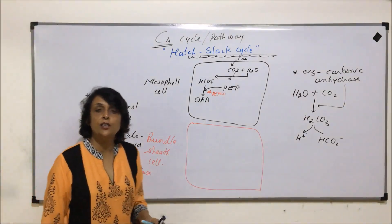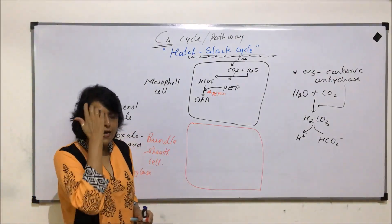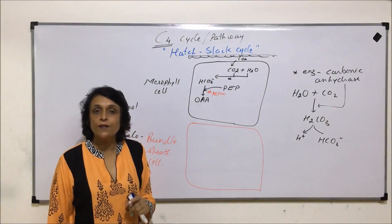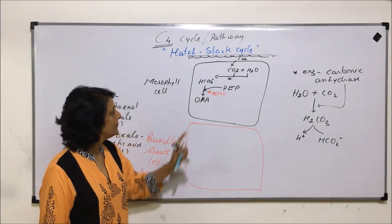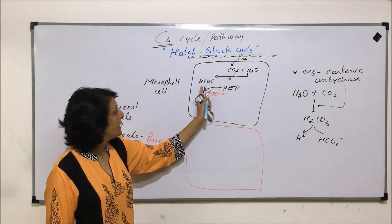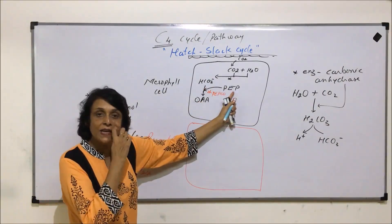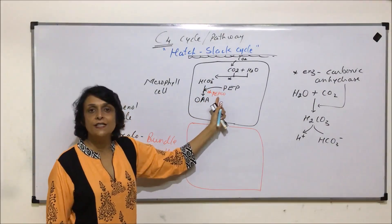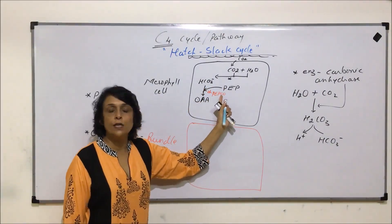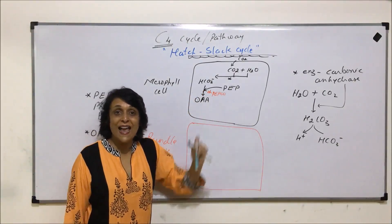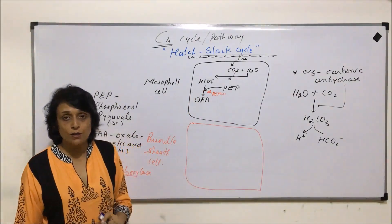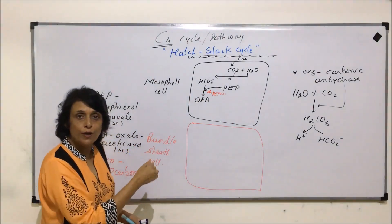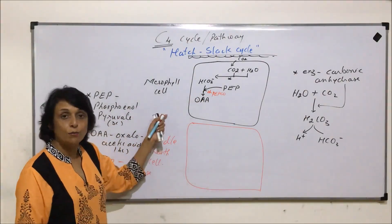PEPCO also helps in the addition of carbon dioxide. In C3 we talked about Rubisco, but Rubisco's behavior changes with conditions. In C4, PEPCO acts only as a carboxylase whether the conditions involve warmer or lower temperatures. So there is no problem in carboxylation here.